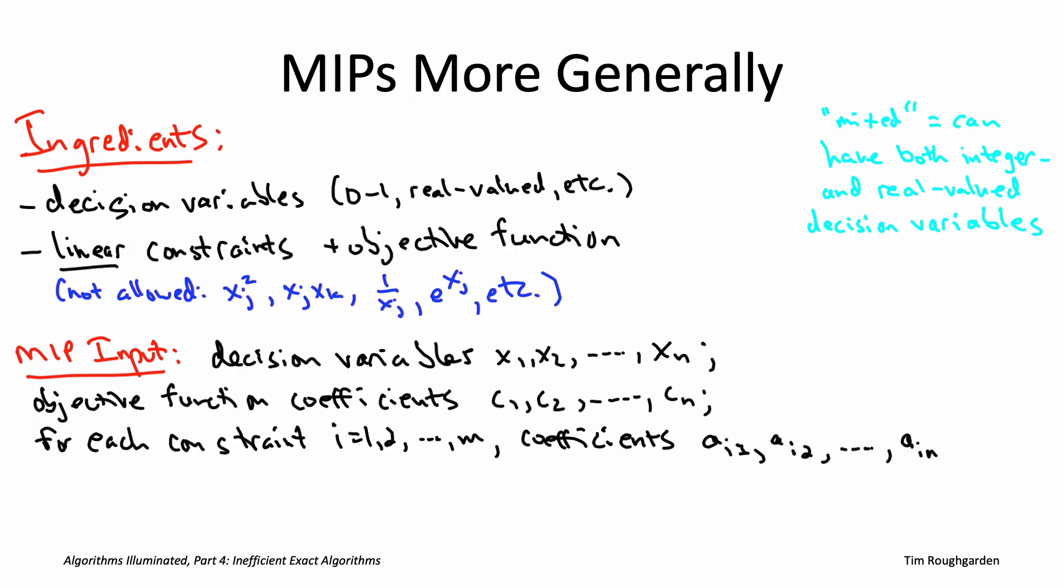The objective function being a linear function, all you can do is basically choose what to scale the different decision variables by. So the input just consists of the coefficients of the linear function. So coefficient cj for each of the decision variables xj.